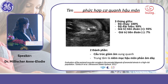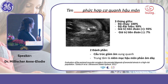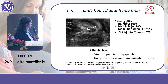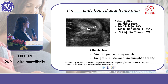On routine ultrasound we must always examine the anal region. At the anal position, we look at two components: the hypoechoic area surrounding — the hypoechoic ring which is the muscular sphincter of the anus — and the hyperechoic central area which is the anal mucosa.